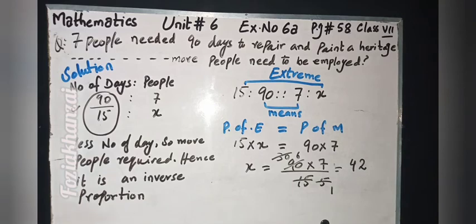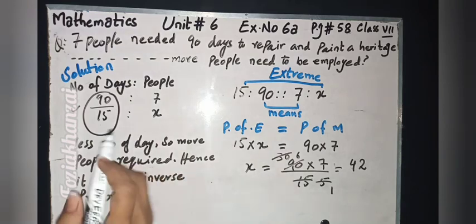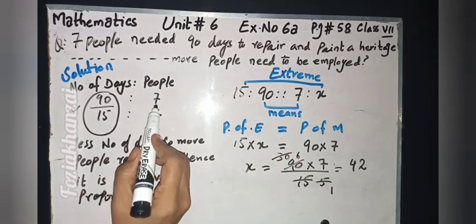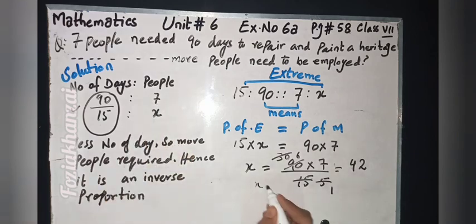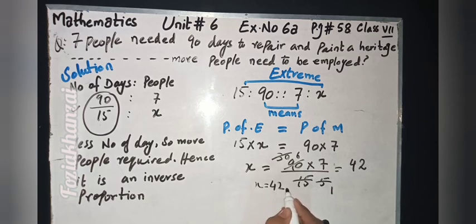So 42 people are needed to complete the job. Now we already have 7 people, so we subtract: 42 minus 7 equals 35. Therefore 35 more people need to be employed. Now write the statement.